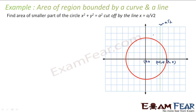The question says I have to find the smaller part. Which one is smaller? Note that a/√2 is approximately 0.7a, so from the center the line is at 0.7a, leaving only 0.3a on the other side. Obviously 0.7a gives more area, so the bigger area is on the left side and the smaller area is on the right side — that is what I am looking for.